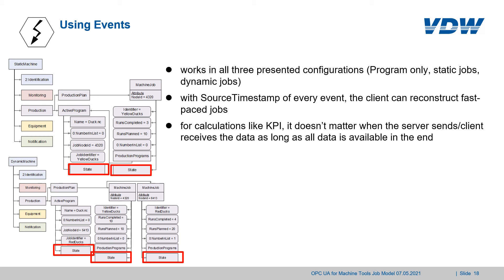The events have the benefit that they have a source timestamp, which is the best timestamp the server knows of the event actually happening. So the client can reconstruct fast-paced jobs after they happen. For use cases like KPI calculations, it is not important that this is real-time conformant — it is okay if the client just receives everything regardless of how long it takes. With the state changes, the program and job objects are also transmitted, as the events contain, for example, the runs completed. With this information a client can reconstruct what happened on a server running very fast jobs and programs.